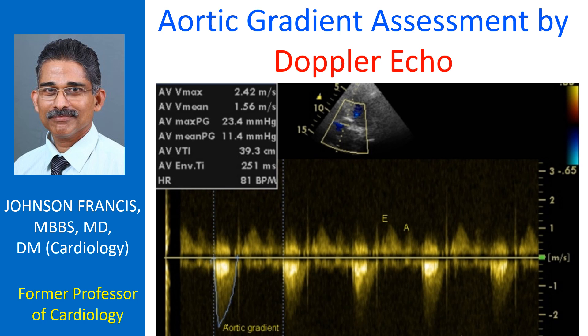Such mild elevation of trans-aortic gradients may be noted in hyperdynamic states like severe aortic regurgitation. But here there is no aortic regurgitation seen on Doppler echo. Similar gradients may also be seen across normally functioning prosthetic aortic valves.